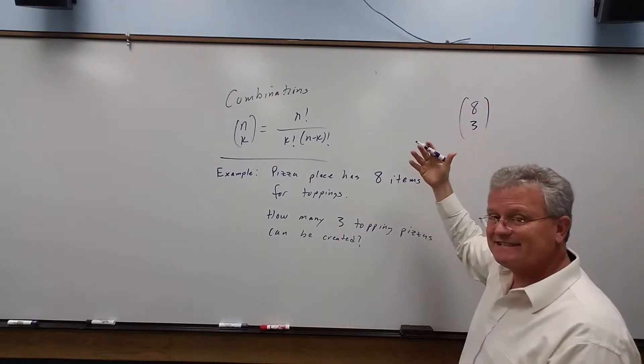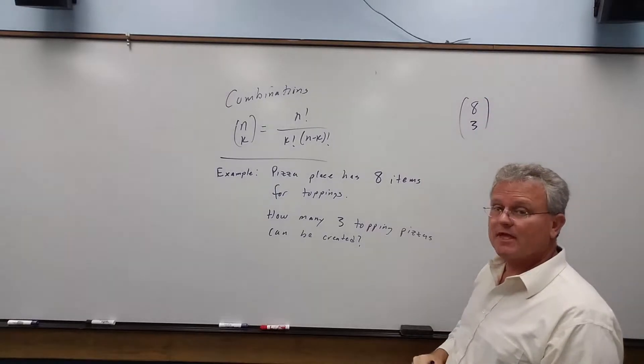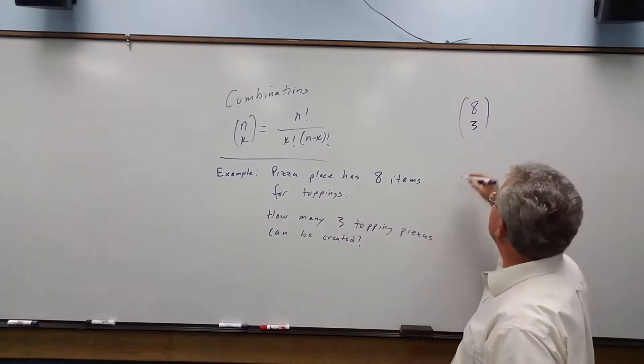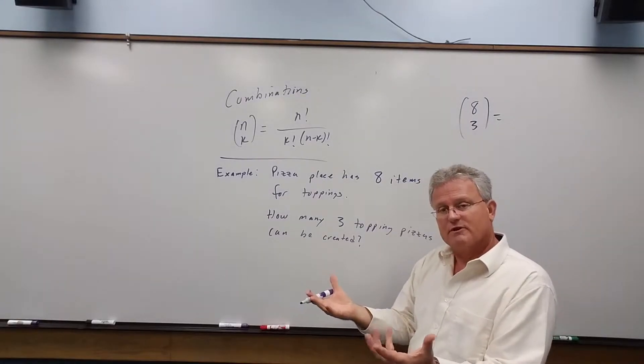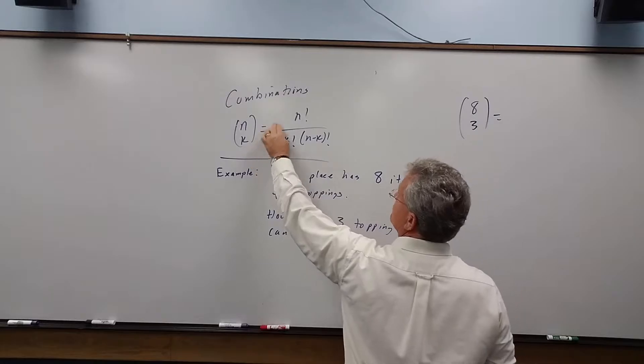So this is a situation where we have eight choose three. Out of a total of eight things, we're choosing three. How many different distinct types of three topping pizzas are there? Well, we now just use our formula.